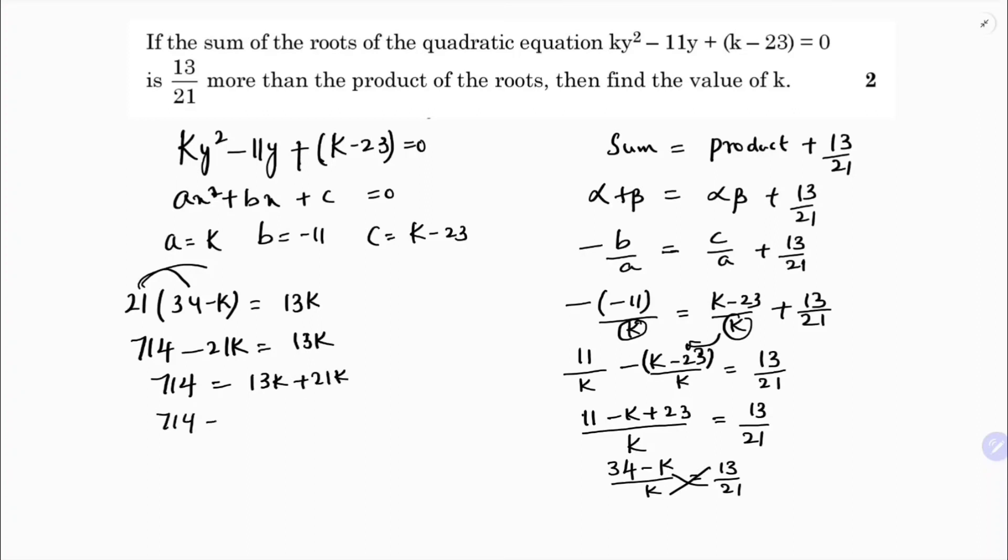714 equals 13 plus 21 is 34k. Now see just if you observe here I multiplied 714, or otherwise just divide 714 by 34 is k. See here I multiplied 21 into 34, I got 714. So 34 times 21. Therefore the value of k is 21.